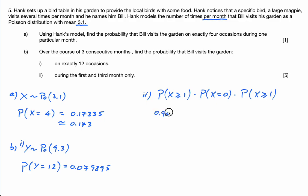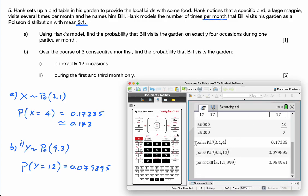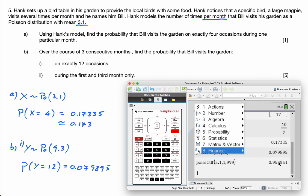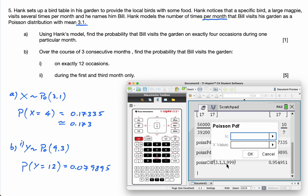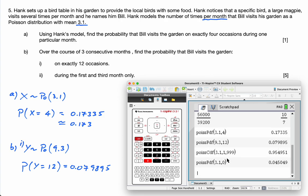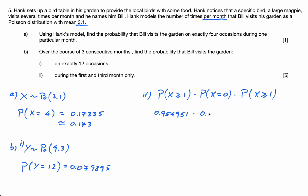0.954951 multiplied by exactly equal to 0. You could do 1 minus that because that's greater or equal to 1, but let's just do it separately again. Distributions, Poisson PDF, 3.1 again. X value is now 0. Press Enter. 0.45049.